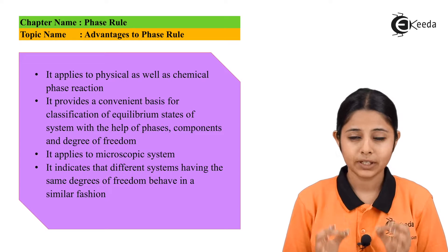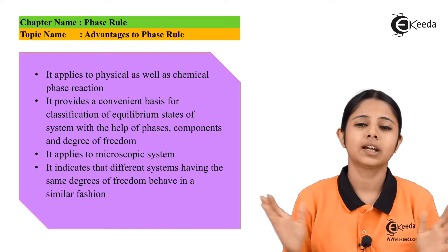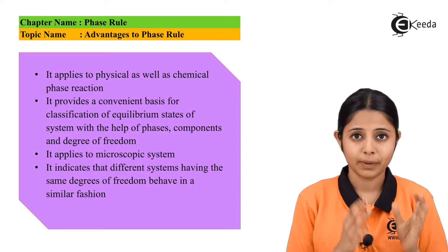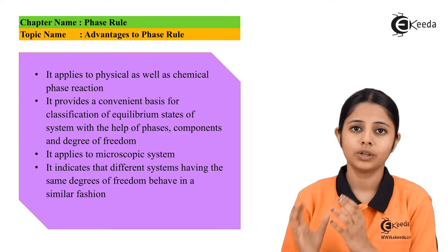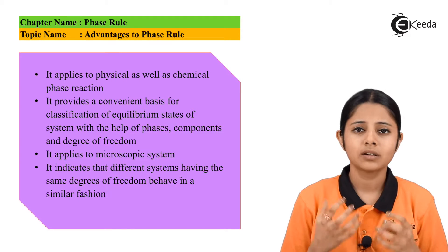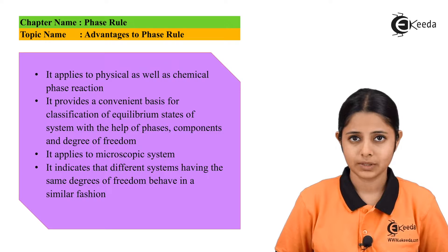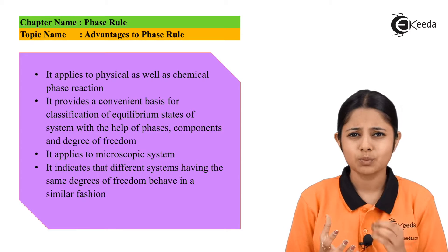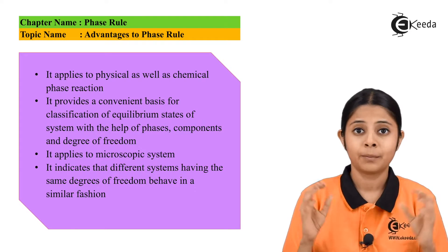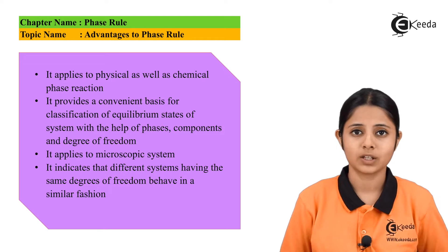The third advantage says that the application of the phase rule can be done for any kind of system. The system can be microscopic, macroscopic or even big systems. There are certain systems which are microscopic systems. That means there are microbes present in it or very small particles present in it. But yet we can apply phase rule to that as well.